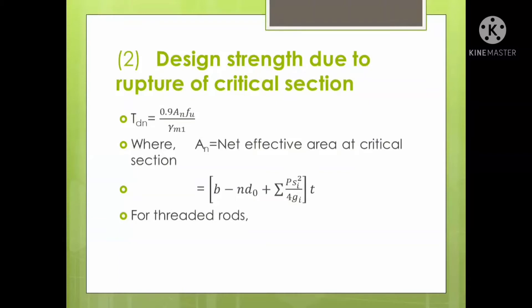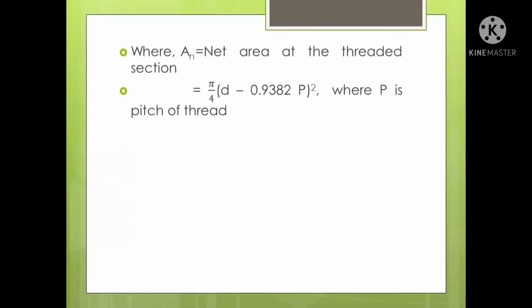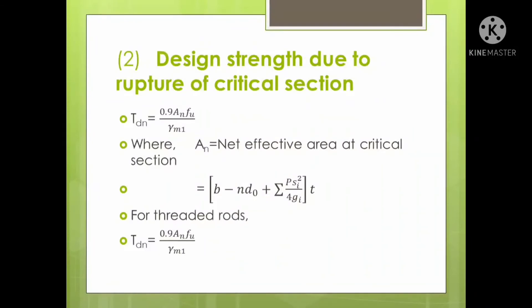For threaded rods, the equation is 0.9 × AN × FU / γM1, where AN is the net area at the threaded section. There are two alternatives: if normal bolts are used, you use the standard AN equation; if the bolts are threaded rods, you use a different net area equation.